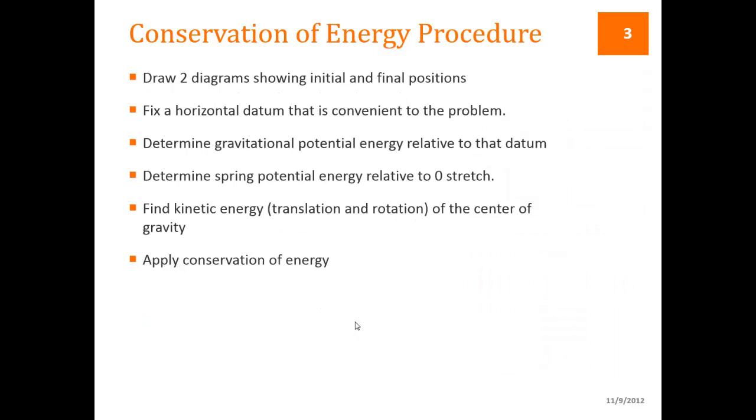The process that we use in order to solve these conservation of energy method problems is to draw two diagrams, one showing the initial position and one showing the final position. Choose a datum that is convenient for the problem, and then determine the gravitational potential energy relative to that datum.